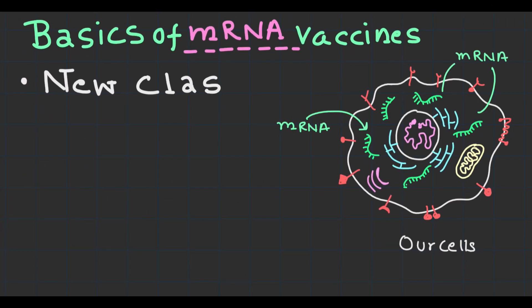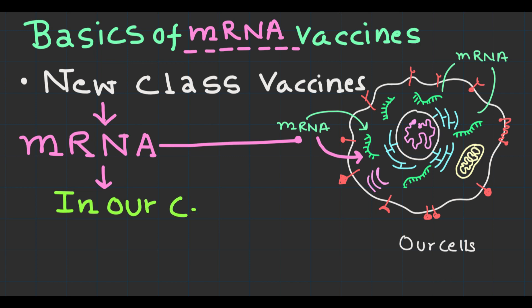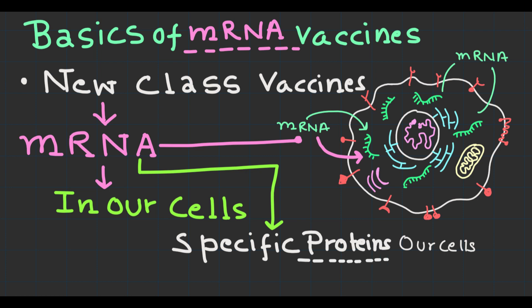mRNA vaccines are a new class of vaccines that harness the power of messenger RNA molecules, which are naturally found in our cells. These vaccines provide instructions to our cells to produce specific proteins, which trigger an immune response against a particular pathogen.